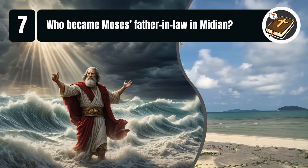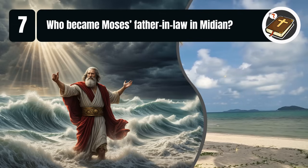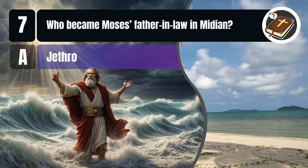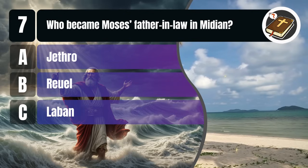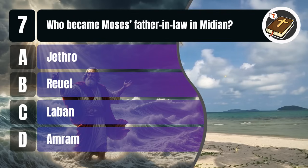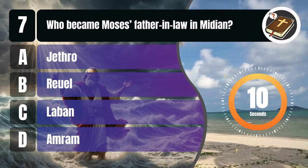Question 7. Who became Moses' father-in-law in Midian? A. Jethro, B. Reuel, C. Laban, D. Amram. You get 10 seconds.